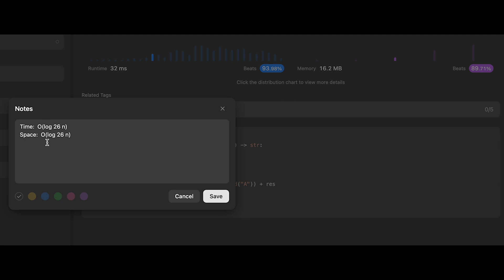And the space complexity is actually the same, order of log base 26 of N. Because the space used to store the result string is proportional to the number of digits in the column number when it is converted to a base 26 system.